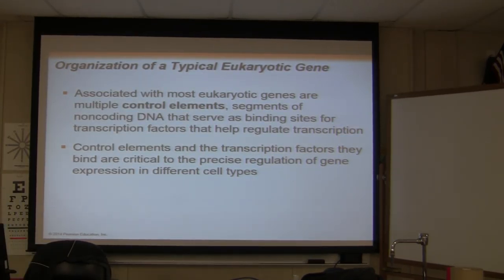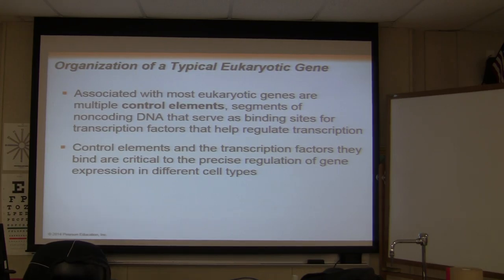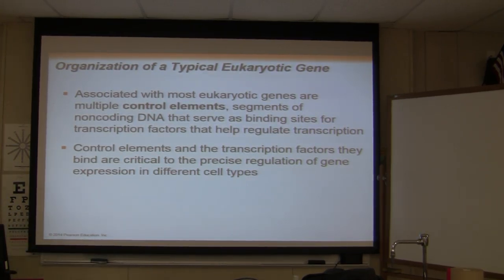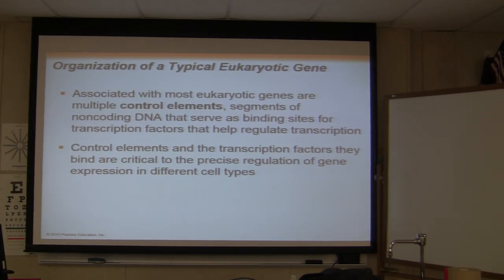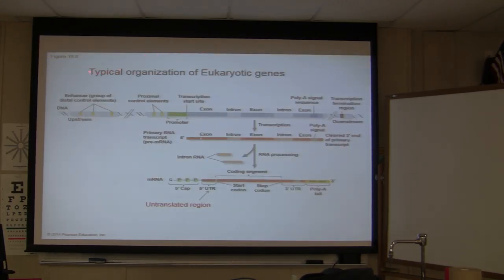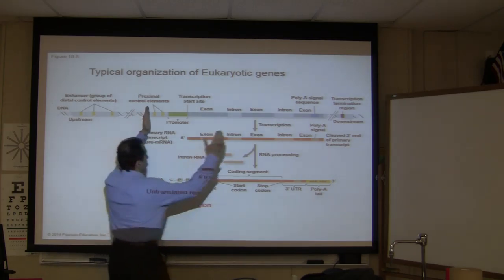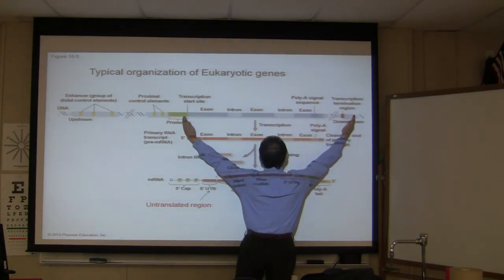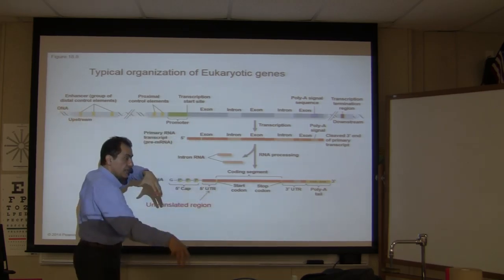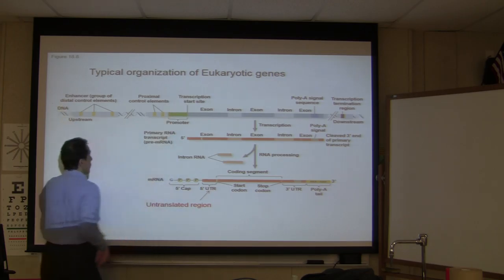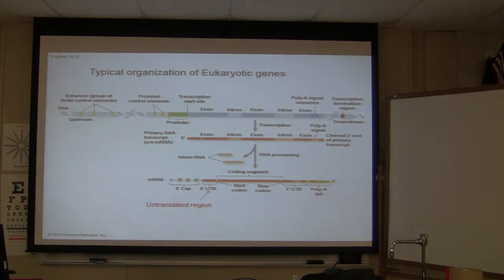Last time we talked about gene regulation in prokaryotic cells, and then I started on eukaryotic cells. Before we get to the organization of a typical eukaryotic gene, what I talked about so far was this portion. I have not talked about this one — that's the difference between this slide and the previous slide. There are a couple of things in here we should know, and the next few slides are going to pertain to that.